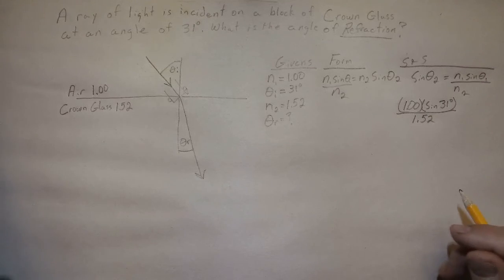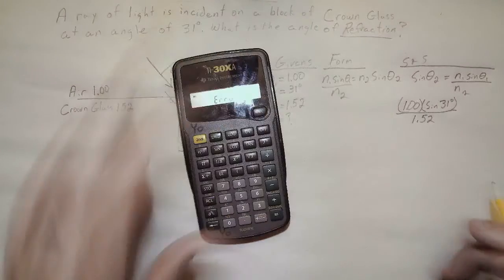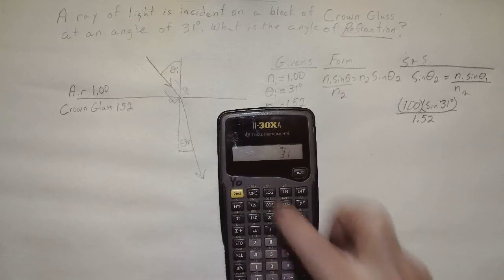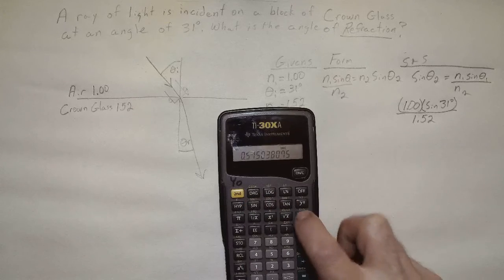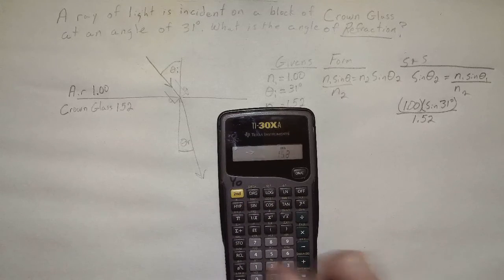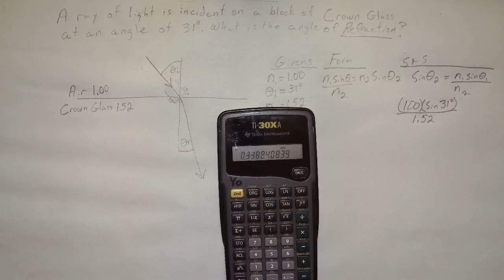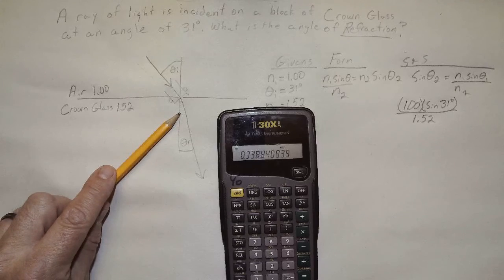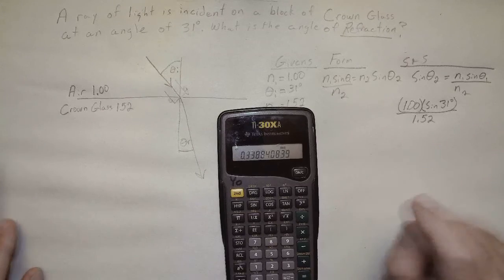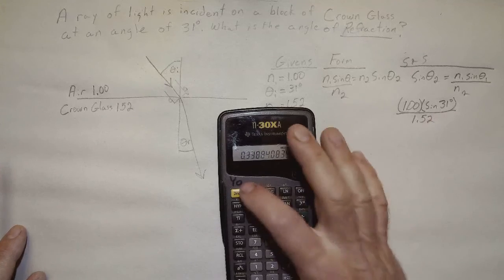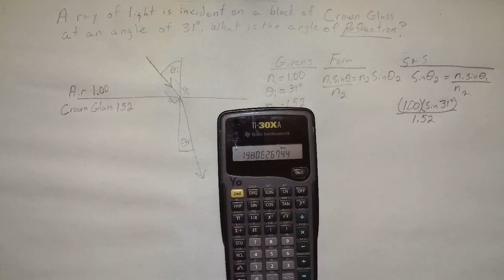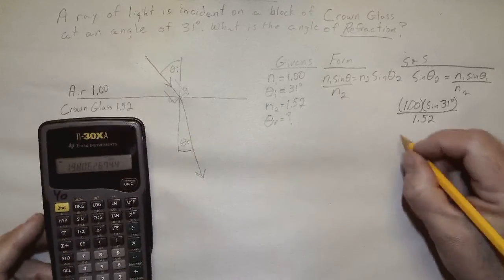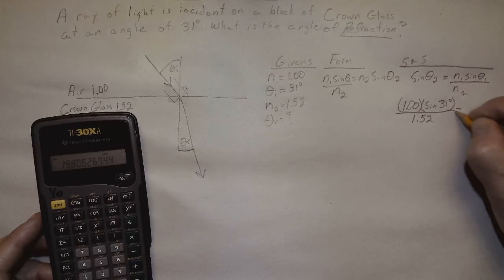Let's do it on the calculator. See what we get here. We have 31, take the sine, divided by 1.52. That equals a number that obviously, 0.338, there's no way that's going to be what the degrees are. And we are reminded that that is not the degree, that's the sine of it. So take the inverse sine. And sure enough, 19.8, that sounds a lot like what we would assume to be a correct answer.